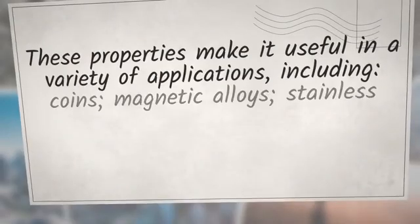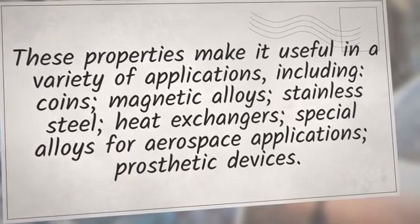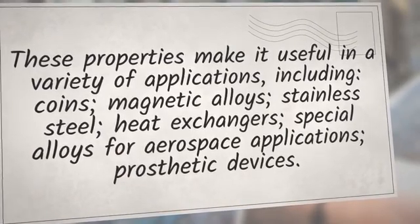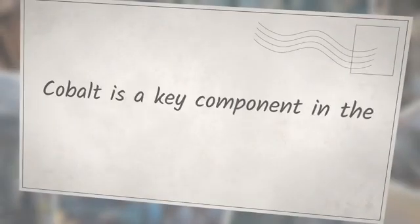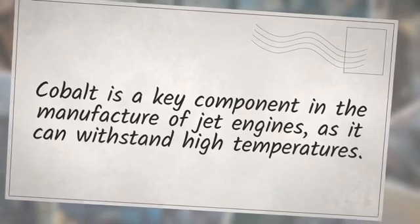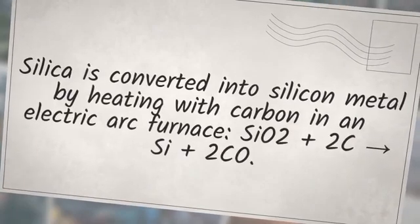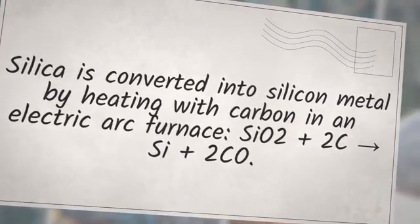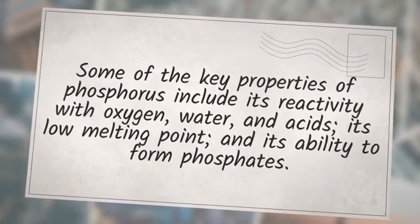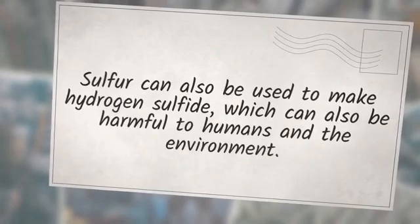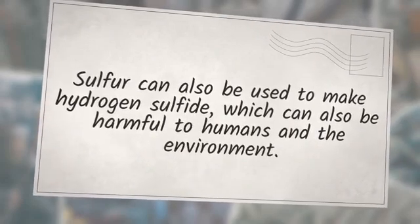These properties make nickel useful in a variety of applications including coins, magnetic alloys, stainless steel, heat exchangers, special alloys for aerospace applications, and prosthetic devices. Cobalt is a key component in the manufacture of jet engines, as it can withstand high temperatures. Silica is converted into silicon metal by heating with carbon in an electric arc furnace: SiO2 + 2C → Si + 2CO. Key properties of phosphorus include its reactivity with oxygen, water, and acids, its low melting point, and its ability to form phosphates. Sulfur can be used to make hydrogen sulfide, which can be harmful to humans and the environment.